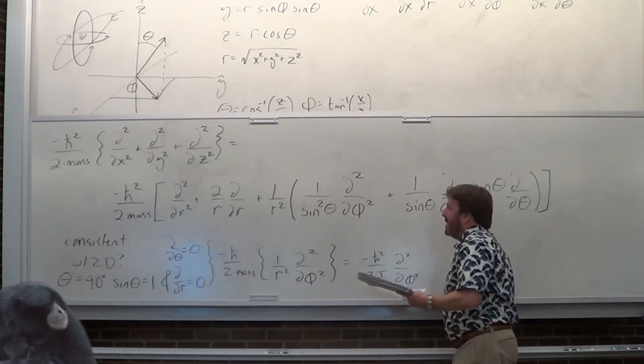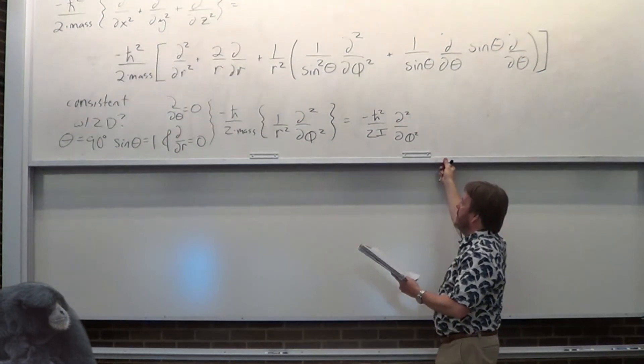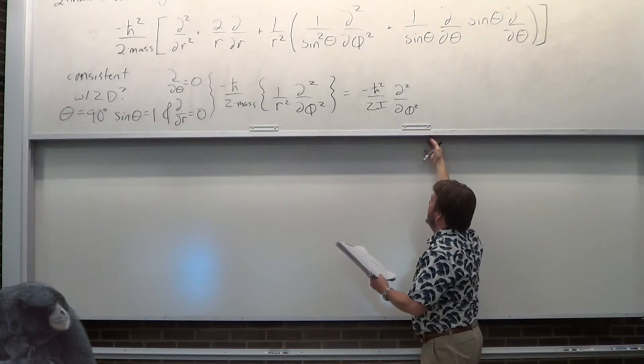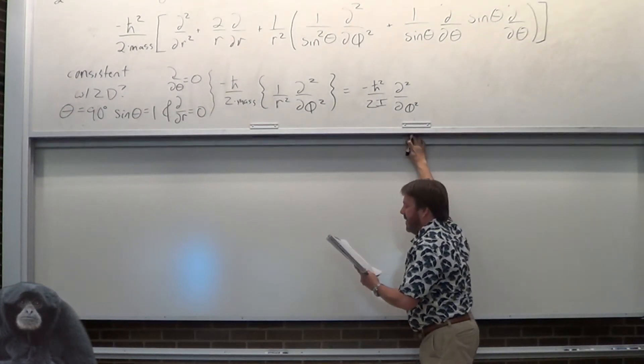Don't get confused — this is just showing you that the 3D Hamiltonian is consistent with 2D, so the world makes sense, although it kind of doesn't.